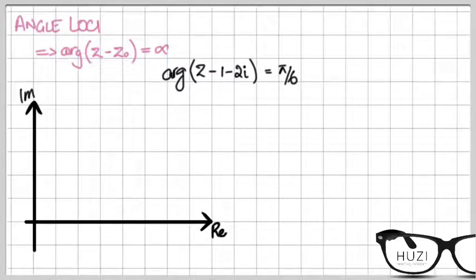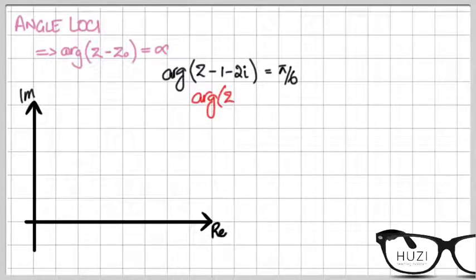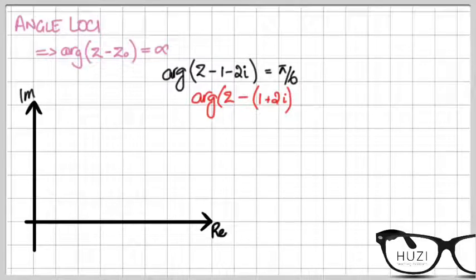Step 1 is the same: you write it in the standard form, that's z minus z₀. So this would become the argument of z minus (1 plus 2i) equals 5π/6.